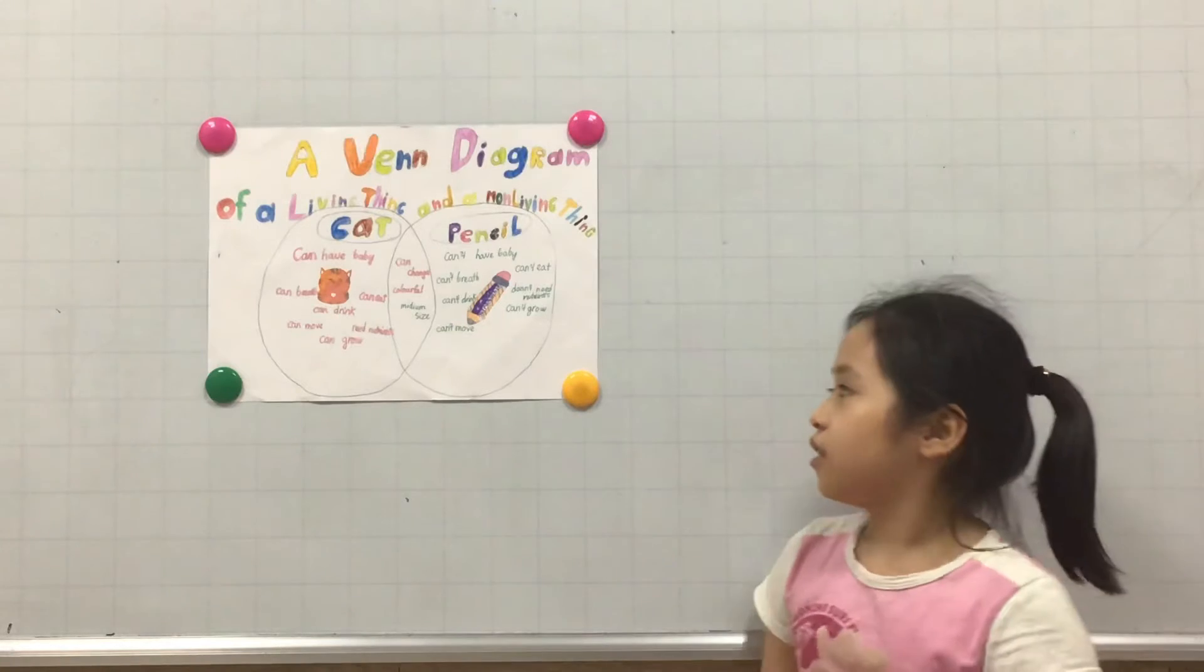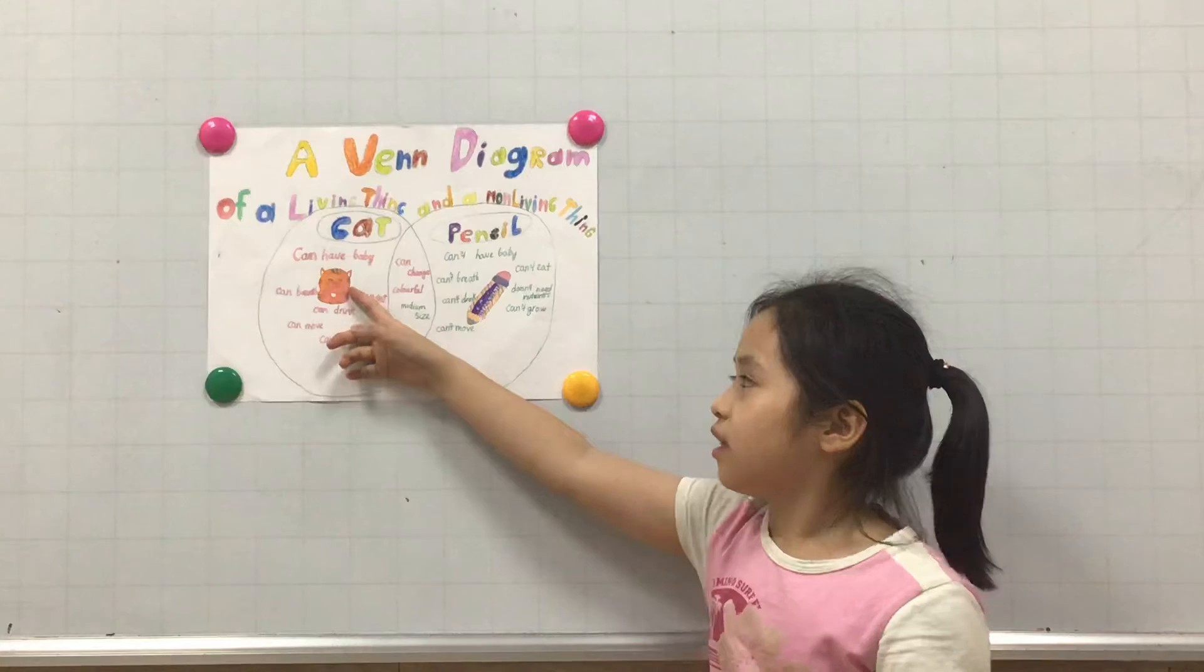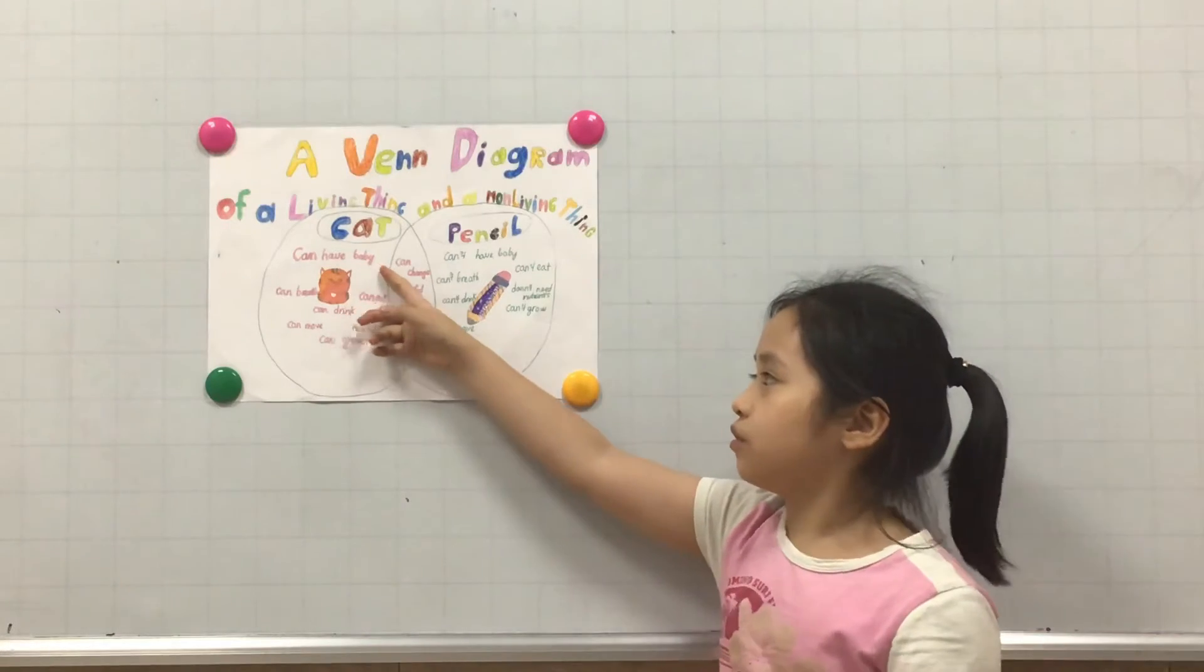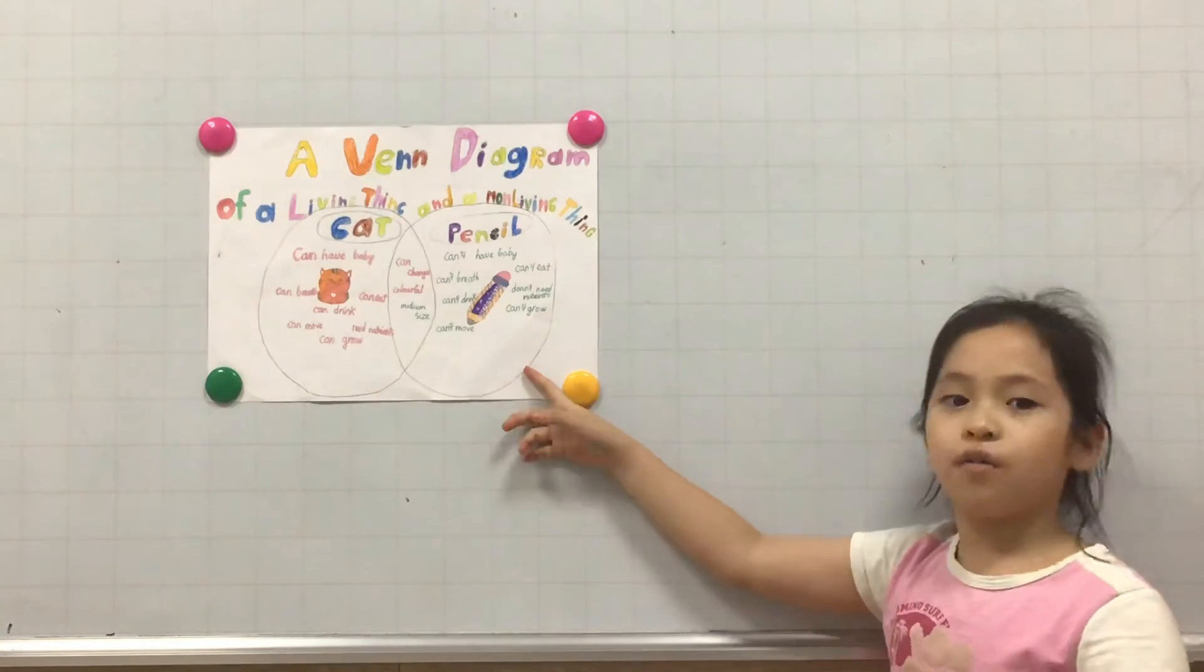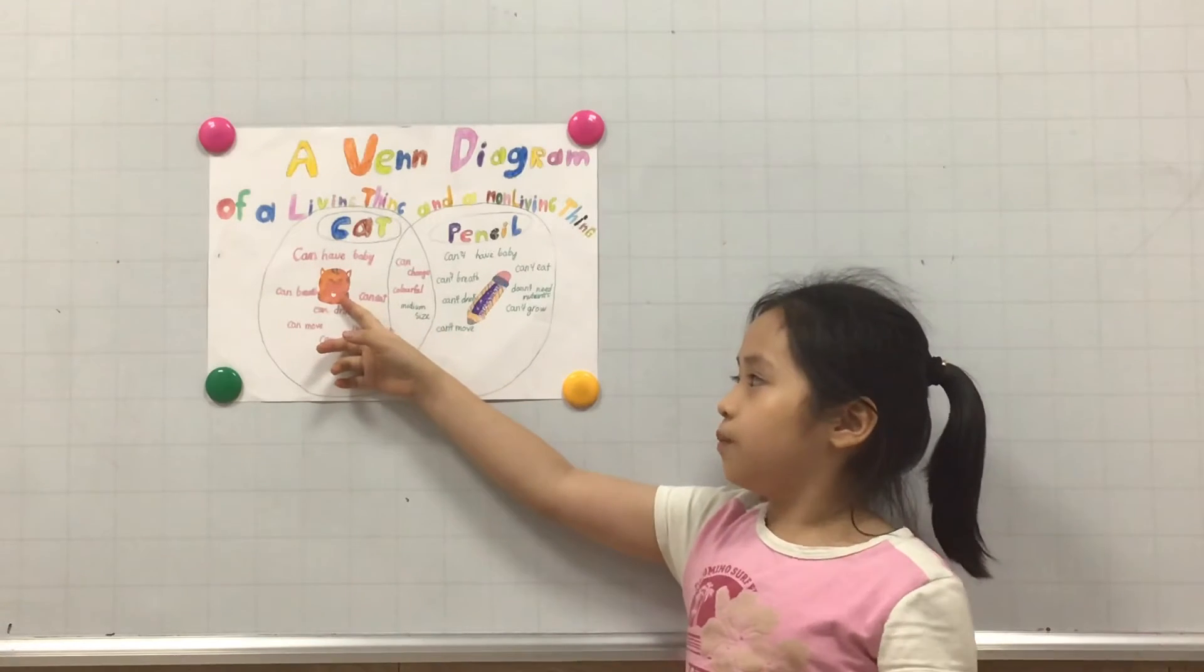First, I will tell you about the differences. The first difference is the cat can reproduce, but the pencil cannot reproduce. The cat reproduces babies.